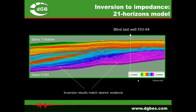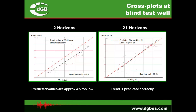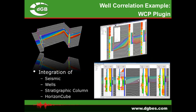In this case we had one blind test well — a well left out of the model building — where we can compare the seismic inversion results with actual well logs. With the two horizon model we are under-predicting, as shown in the cross-plot on the left. With the many horizon model we are predicting spot on. Another application of the HorizonCube is well correlation: we can build random lines through our wells, pick markers in the wells, and QC those markers using the seismic as a backdrop, with the HorizonCube guiding the correlation from one well to the next.